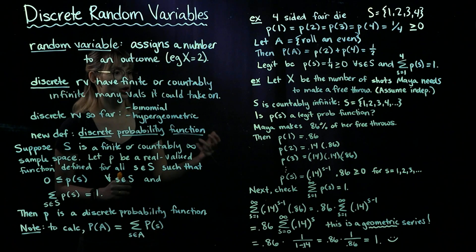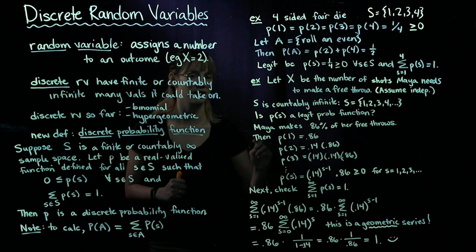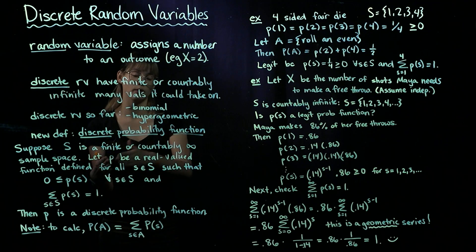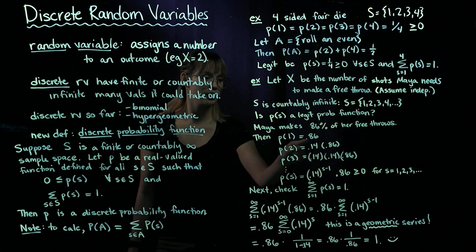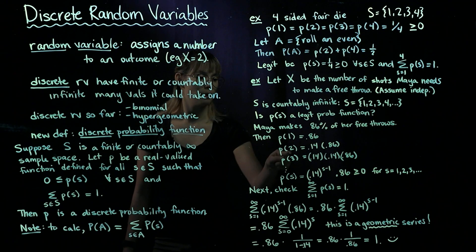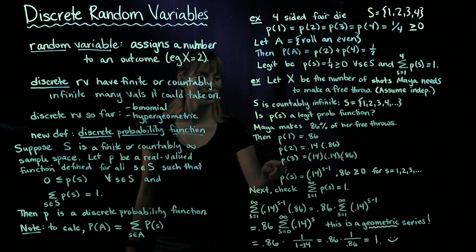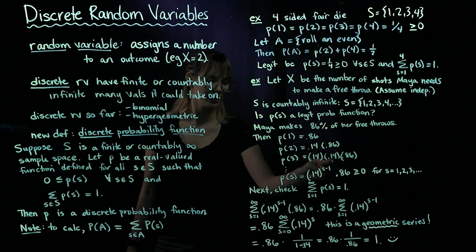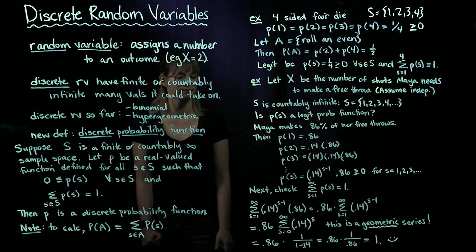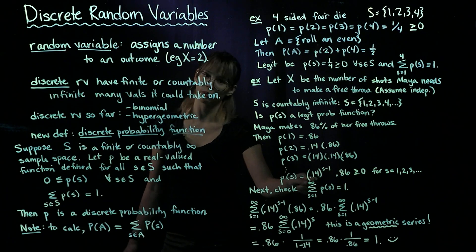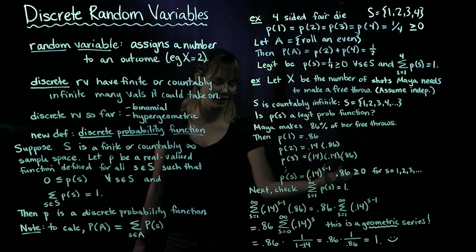Let's pull in some real-world information. Her career probability of success is 86%, so she makes 86% of her free throws. If we assume that each throw is independent, then the probability of her making her first one is 0.86. The probability of missing on the first and then making it on the second would be the probability of missing on the first times the probability of making it on the second, since they are independent. Similarly, the probability of making it on the third would be the probability of missing on the first, missing on the second, and then making it on the third. In general, for any S from 1, 2, 3 upward, P of S equals 0.14 to the S minus 1, times 0.86.